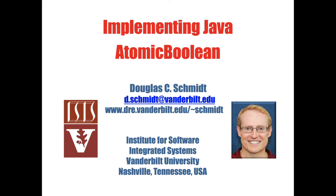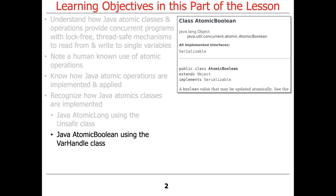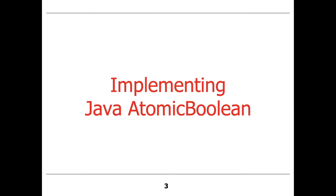Our previous lesson talked about implementing AtomicLong using the Java Unsafe class. We're now going to talk about implementing Java AtomicBoolean, and we're going to show how to do it using the VarHandle class. You'll get a more comprehensive view on how to use these different features. The logic is very similar — just the types of the values are slightly different.